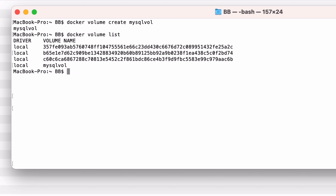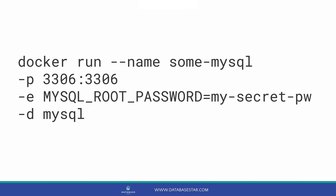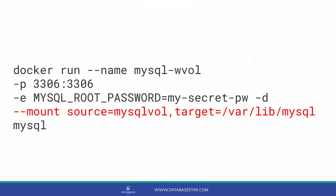Now that we have our volume, we can create a container that uses this volume. To do this, we use the docker run command and add a parameter for it. We'll be using MySQL for this demo, but this should work for other databases such as Oracle, SQL Server, and PostgreSQL. To use the volume we just created, we add a parameter called mount before the image name. So we add two dashes, then mount. After that, we add the source and the target, separated by a comma. The source is the name of the volume we have created, which is mysqlvol. The target is set to var/lib/mysql, which is the location within Docker that MySQL uses.